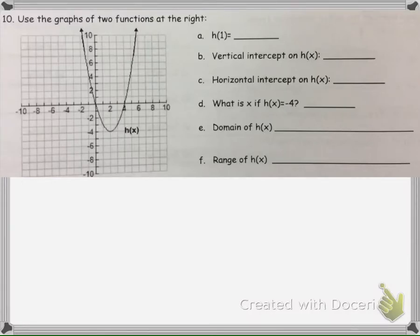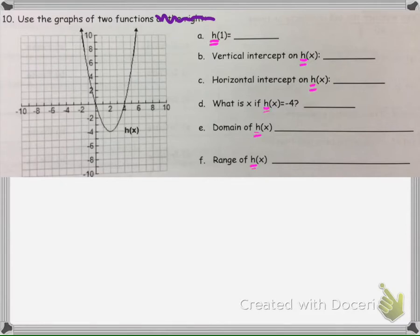We're going to use this graph to answer the questions on the right. We know to use this graph because it has an h here, and all of these questions have h's. That's how we know questions a through f go with this particular graph.